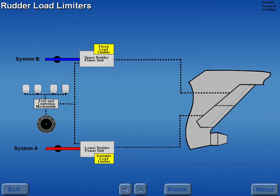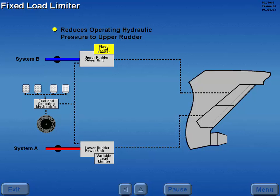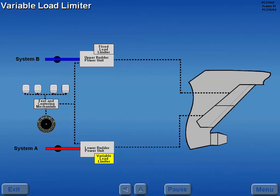Load limiters for both the upper and lower rudder reduce the amount of hydraulic pressure applied to a specific rudder. The upper rudder has a fixed load limiter which reduces operating hydraulic pressure to the upper rudders at all times.